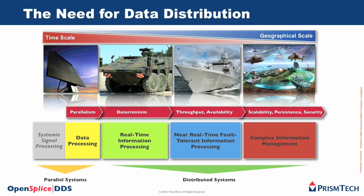Looking at this progression of applications, they share the same abstract need: data distribution. Each application operates at a different time scale and has different inner and geographical scale, but once you fix those dimensions, they all have one common need — data has to be delivered on time. Because in most of these systems, if the data doesn't arrive when needed, then it's worthless.